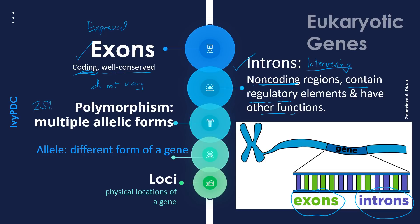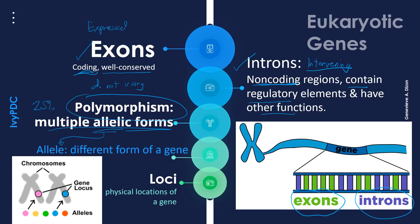25% of human genes have multiple allelic forms, and we call this polymorphism. An allele is defined as a different form of a gene — in other words, different gene variations. The next term to remember is loci, which is the physical location of a gene, meaning the position of the gene on where it may be found in the chromosome.